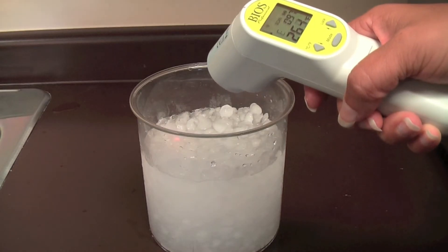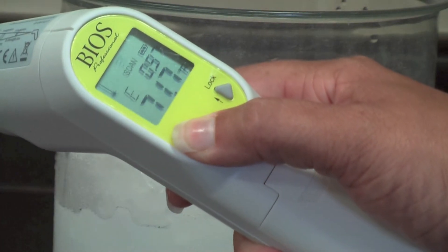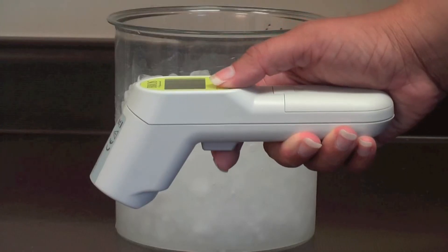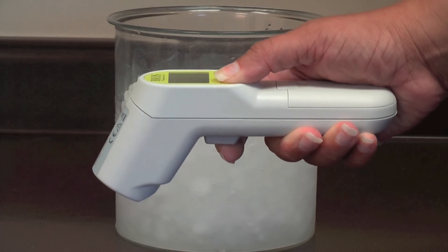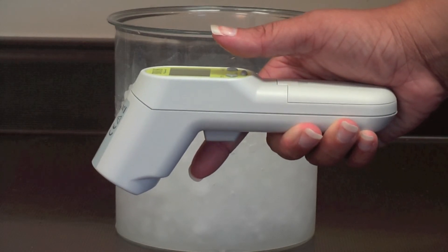Infrared thermometers without the K-type probe do not penetrate into the product. They only give surface temperatures. Activate the laser pointer on the infrared thermometer for better reference. To do this, press and hold the trigger and Celsius Fahrenheit buttons at the same time.